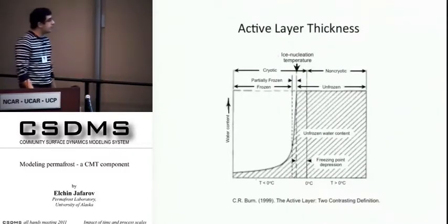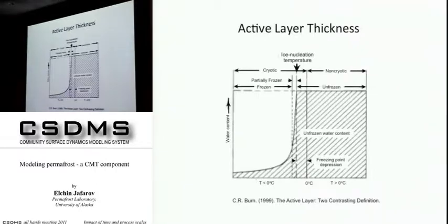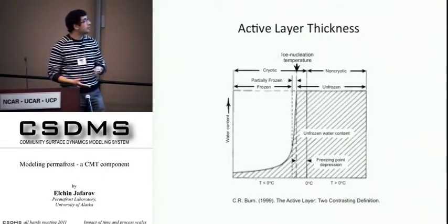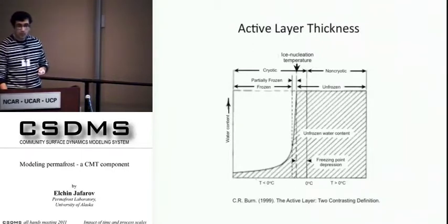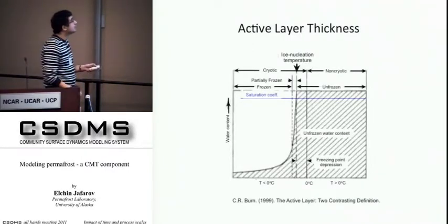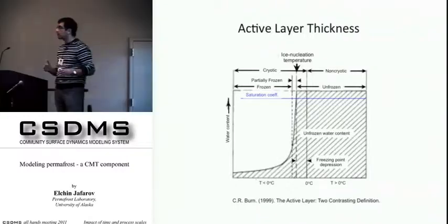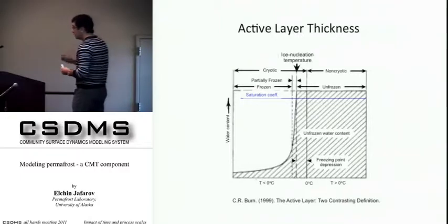How do we define active layer? There are two major definitions. One is based on the zero degree divider. However, in our model, we define it a different way based on the unfrozen water content. We define an unfrozen water saturation coefficient. Whenever that saturation coefficient intersects with the unfrozen water function, we treat that depth as the active layer depth.